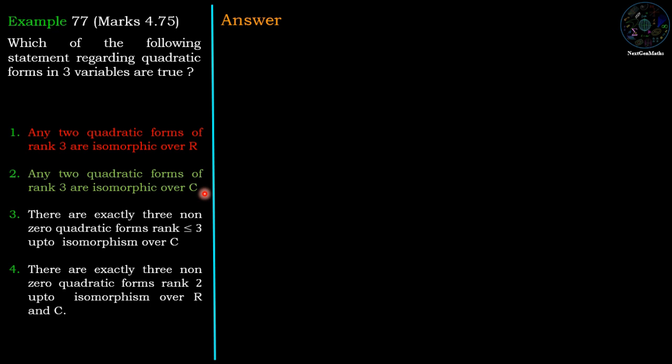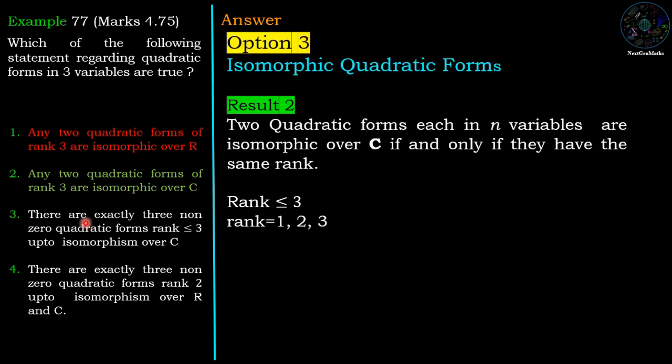Now option 3 is about rank ≤ 3. For rank ≤ 3, we have three possibilities: rank 1, rank 2, and rank 3. Therefore we have three different isomorphism classes. So option 3, which says there are exactly three non-zero quadratic forms of rank ≤ 3 up to isomorphism over C, is correct.